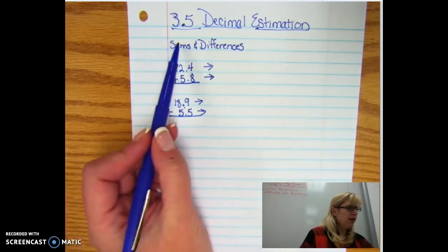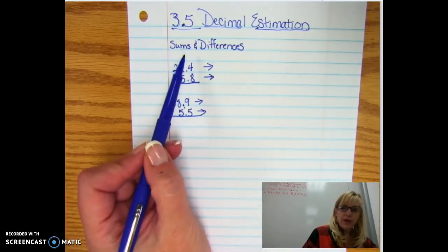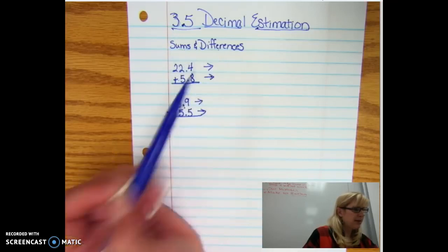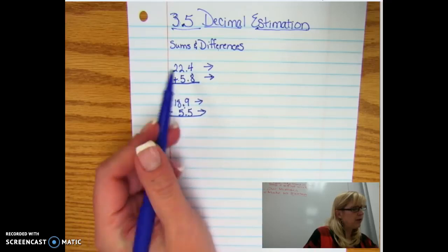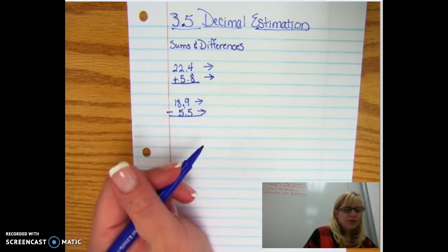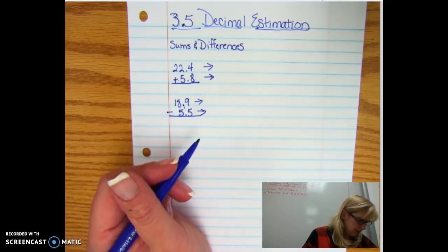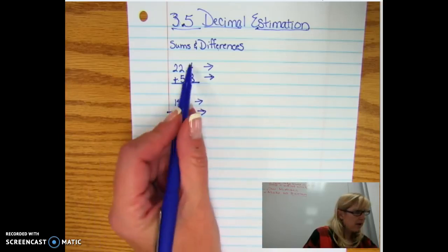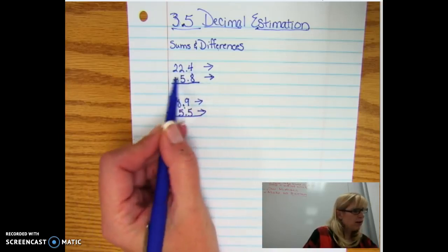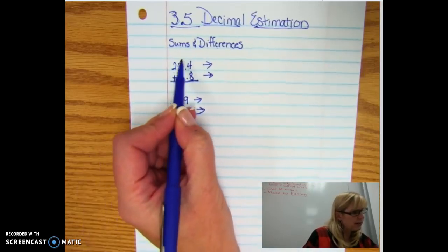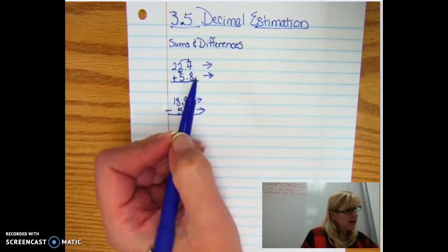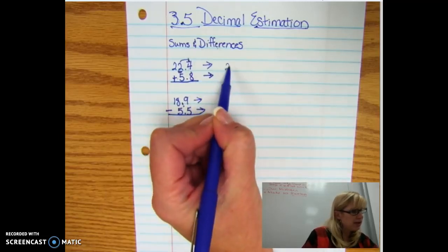So the estimation we are going to work with is the sums and the differences. So if you see a number like 22.4, 5.8, generally speaking what you are going to do is you are going to round them to the whole numbers on this side of the decimal. So 22.4, we're going to round to the ones place, we're going to look to the right and see that it's going to round down to 22.